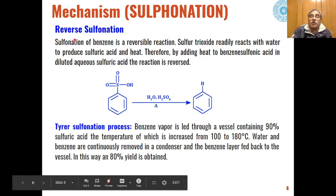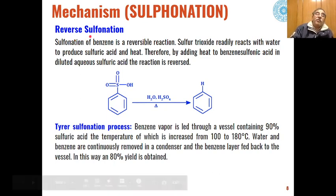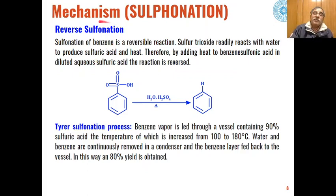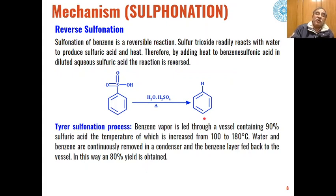An important feature of sulfonation is that if excess sulfuric acid and heat are used, the reverse of sulfonation also takes place. Sulfonation of benzene is therefore a reversible reaction. In the presence of sulfuric acid and water, when the product is heated, elimination of sulfur trioxide occurs and benzene is regenerated — the same reactant used in sulfonation — so reverse sulfonation can take place very easily.